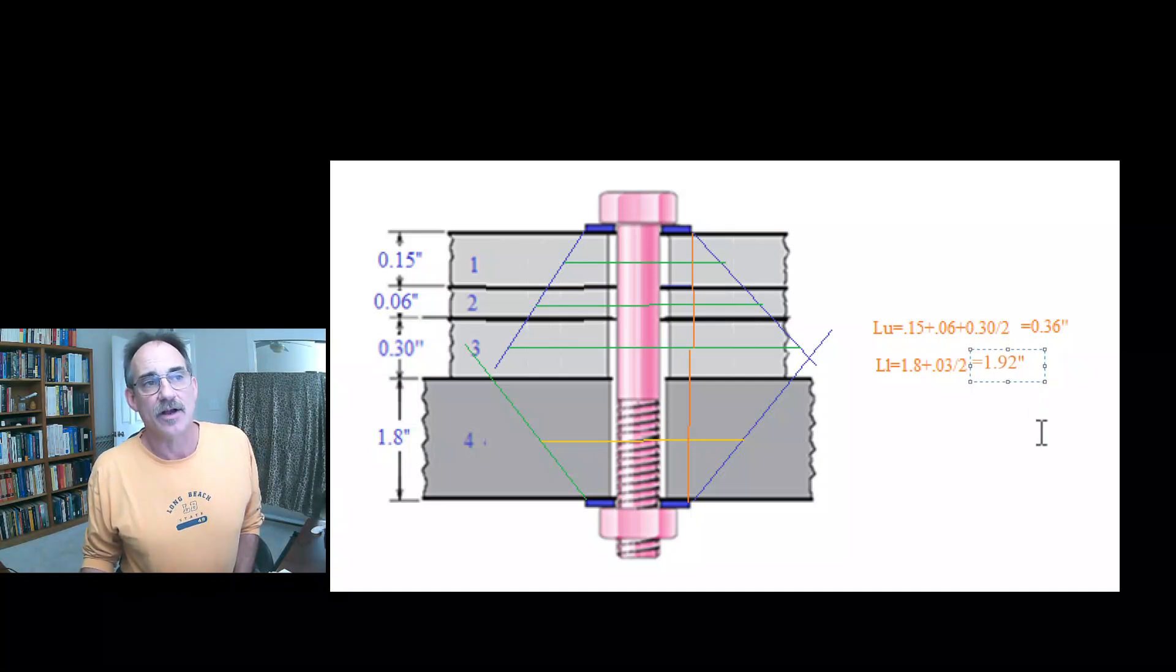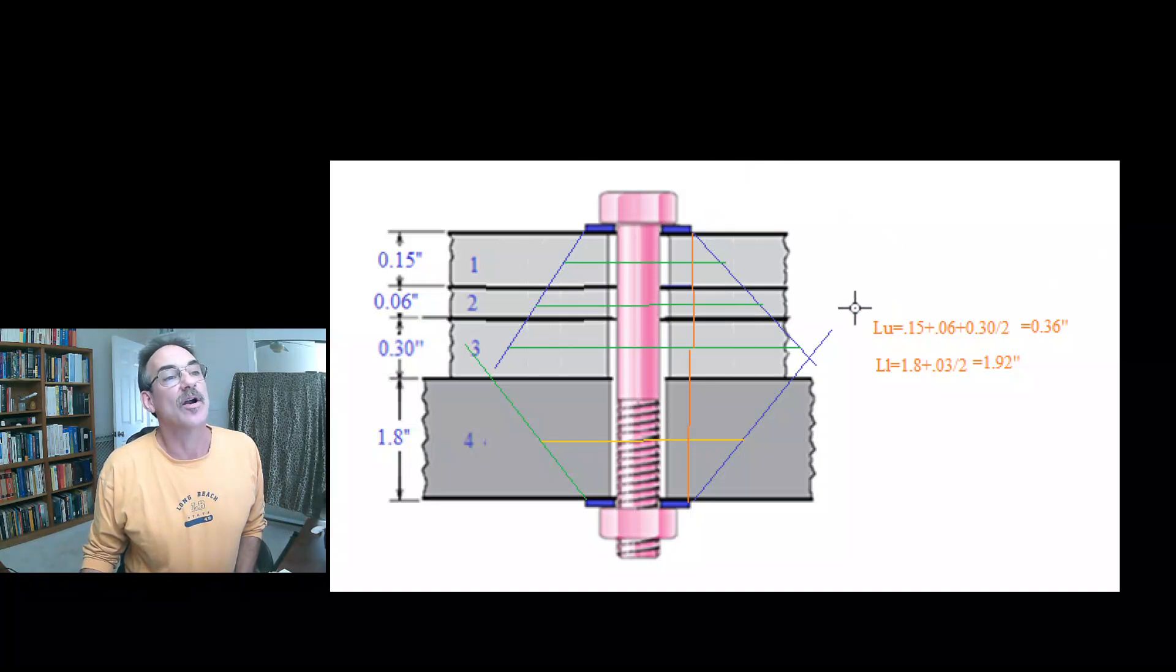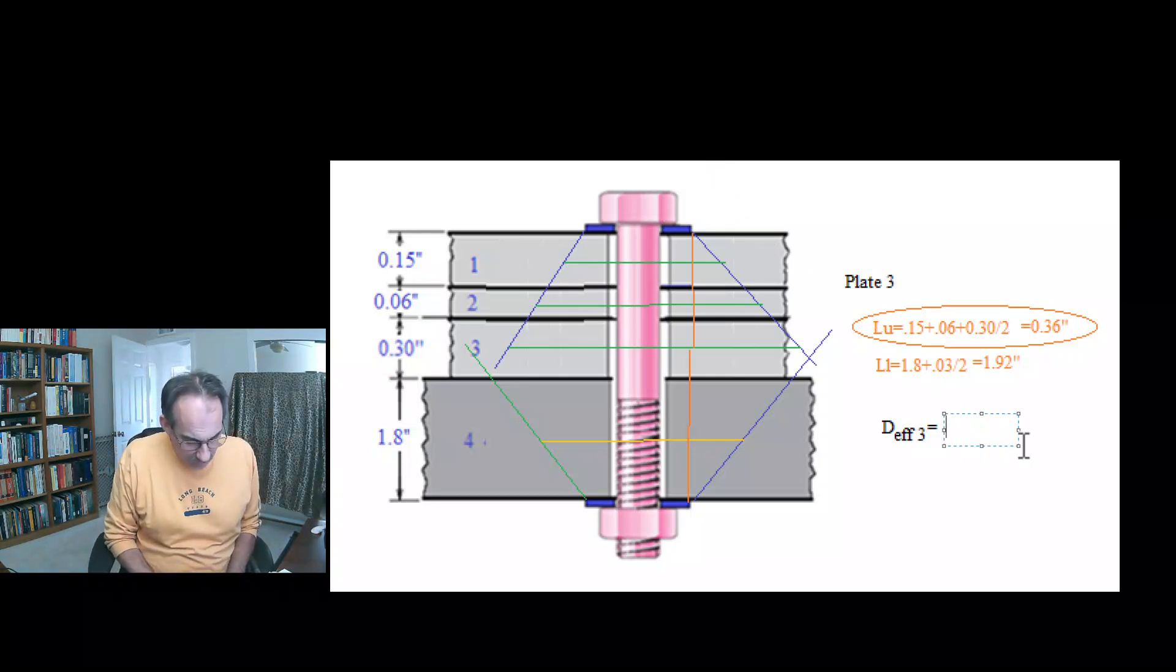It's obvious that that depth coming from the upper one is smaller. We're going to be fanning out by that amount, whatever that depth is. If we use 45 degrees, it's going to be that amount on both sides. So we're going to select this one as our critical value. Then we're going to calculate our effective diameter for plate three.